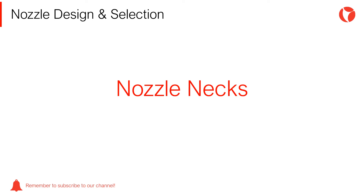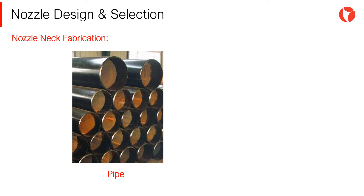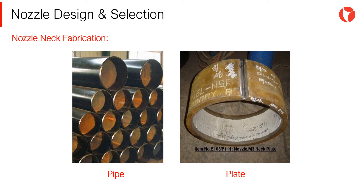Nozzle necks may adopt different configurations depending on the operating pressure, fluid, temperature, size, and client requirements. Generally, nozzle necks for storage tanks can be obtained from commercial pipes — this is the preferred option, used for pipes normally up to 12 to 16 inches nominal pipe size. Alternatively, they can be made out of plates when pipes are not available, normally for 16 inches and over.